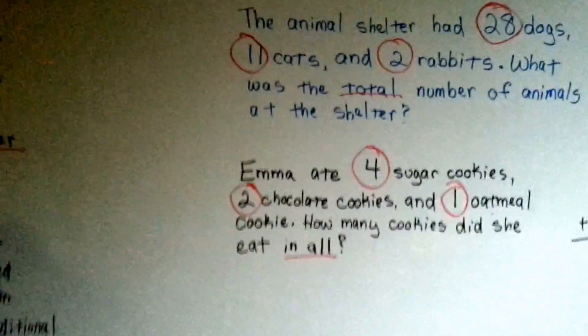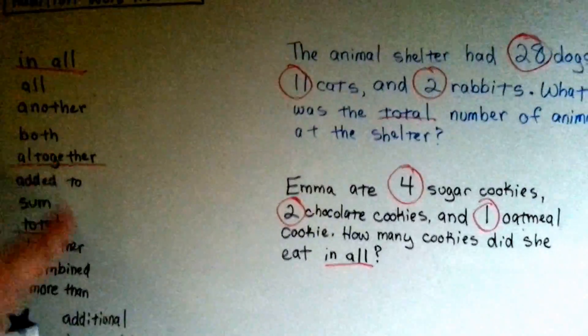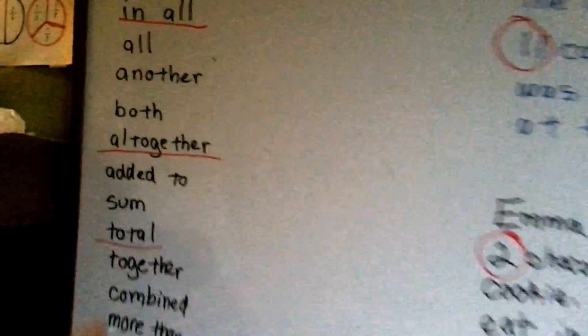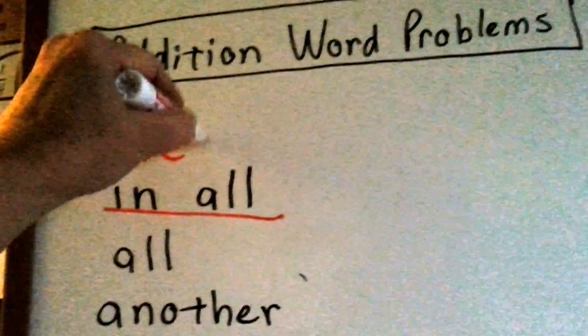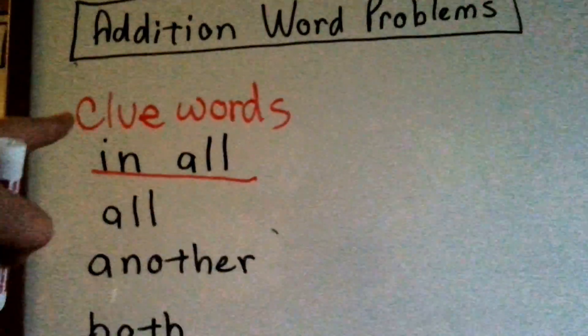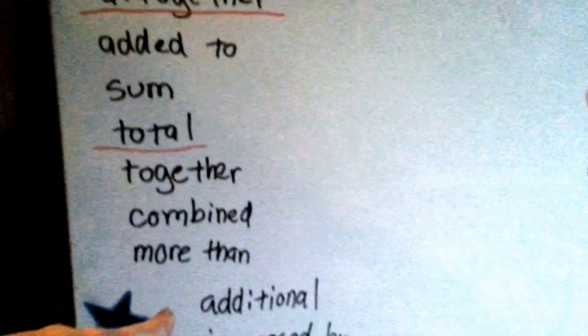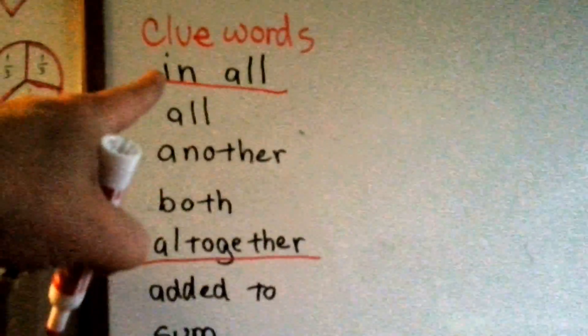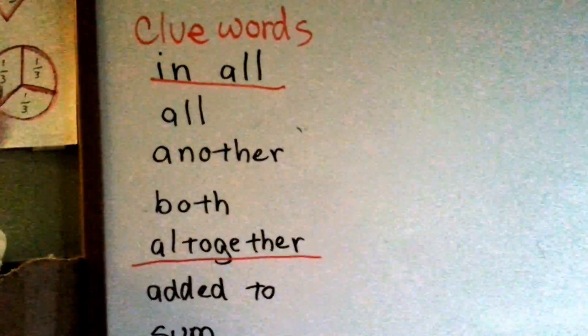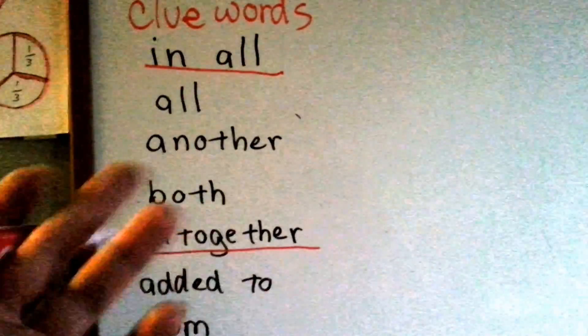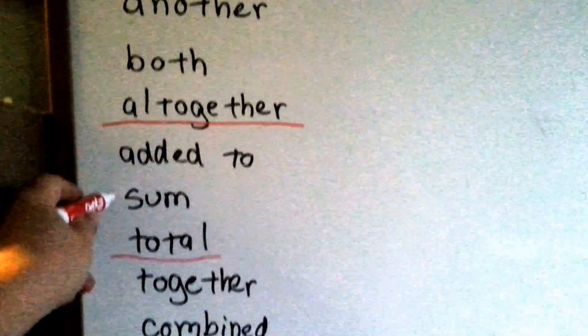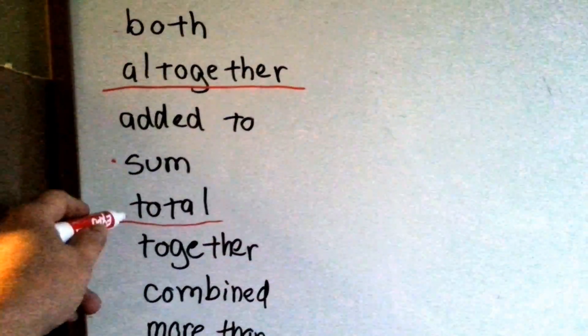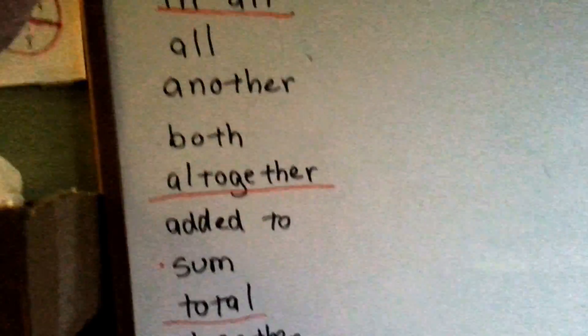Whenever you do a word problem, look for the clue words. These are the clue words right here, that tell you what you need to do. These are the clue words. These words tell you to ADD. And it makes sense. If someone said IN ALL, you know they want all the numbers, right? Or ALL TOGETHER, or ADDED TO. You know, SUM is the answer in an addition problem. Total. That's all of them together, right? Together. Combined. So these are important words that tell you that you need to ADD for the word problem.